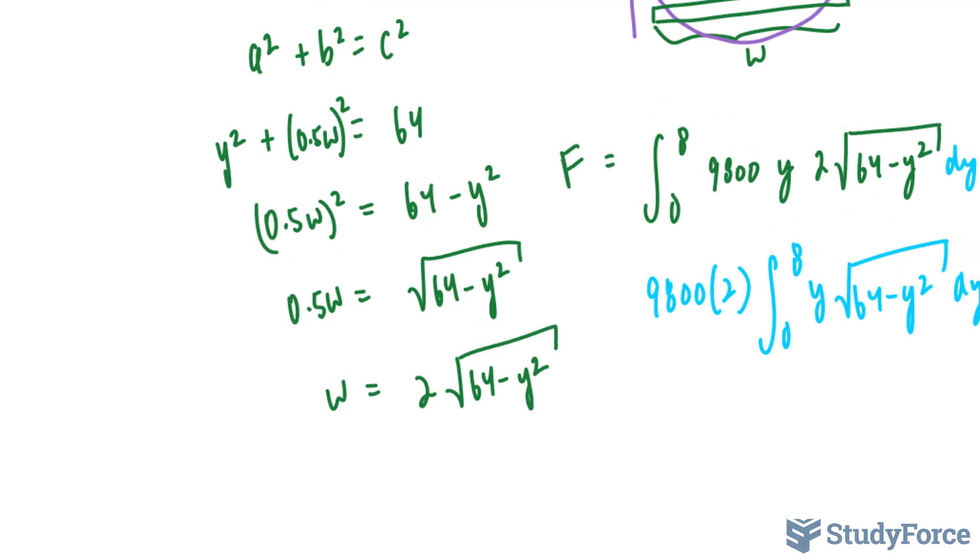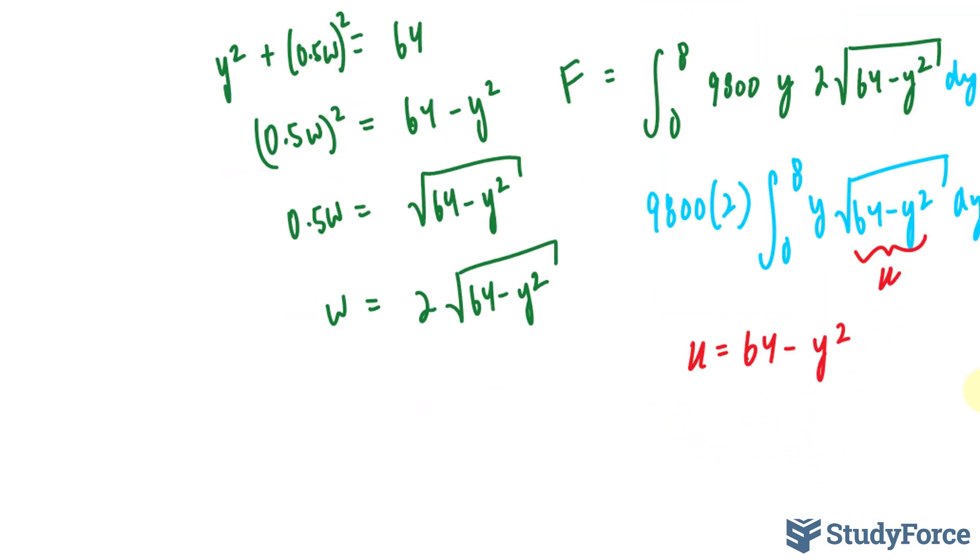Next, what I'll do is use u substitution. So I'll set this part equal to u. u is equal to 64 minus y squared. I'll take the derivative implicitly and I get du is equal to, this goes away, it's a constant, and the derivative of this term becomes negative 2y dy.